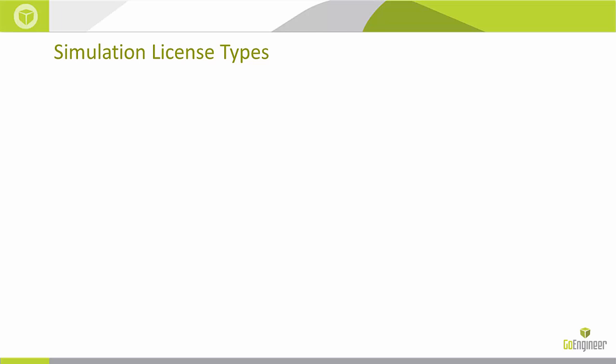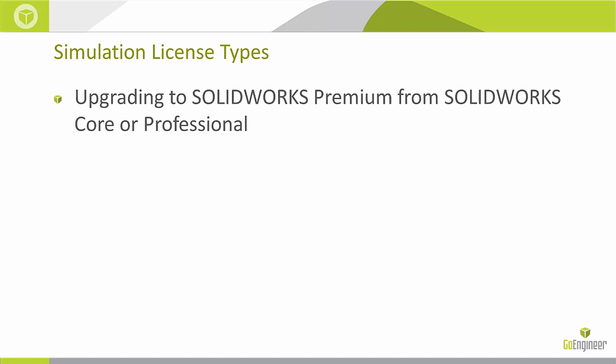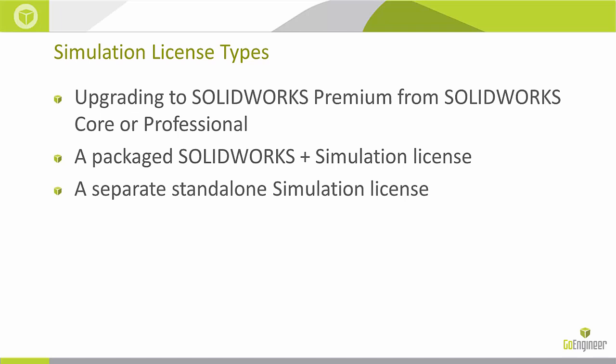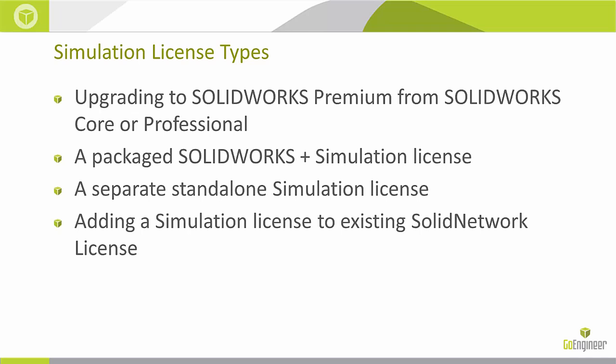Depending on what kind of license you bought, the method to install it may be slightly different. I'm going to show four different ways to install this license. The first assumes you already have purchased a SOLIDWORKS license and installed it, and now you're upgrading SOLIDWORKS to Premium and needing access to your simulation software. The second is you've purchased an add-in to your existing SOLIDWORKS license and need to refresh that installation. In the third scenario you've bought a separate standalone simulation license, and in the fourth scenario you're adding a simulation license to an existing SOLIDWORKS network license.